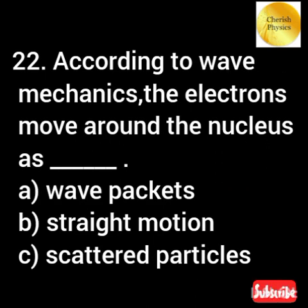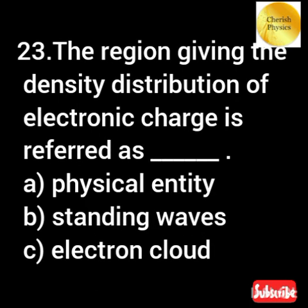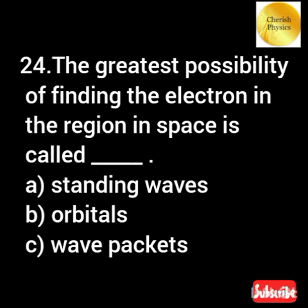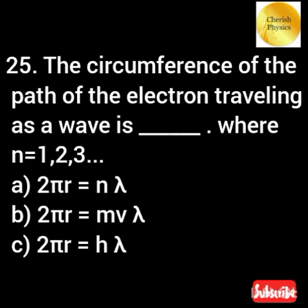According to wave mechanics, the electrons move around the nucleus as... The region gives the density distribution of electronic charges. The greatest possibility of finding the electron in the region in space is... In the circumference of the path of the electron traveling as a wave is...